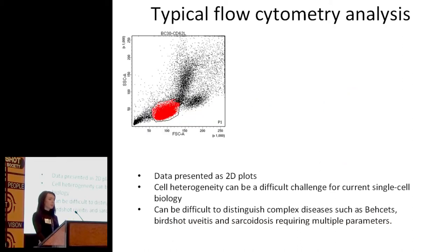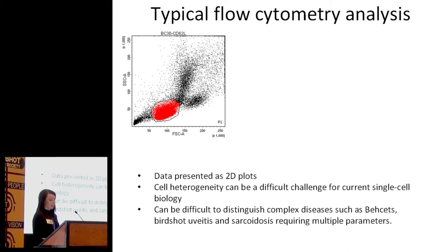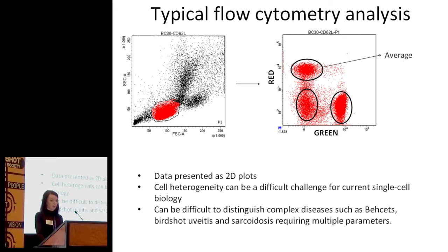If you're going to do flow cytometry, this is the typical flow cytometry plot that you would get. It's represented as a two-dimensional plot, so you're looking at two parameters at any one time. Each dot within this plot is representative of a single cell, and single cells will always cluster together with similar characteristics. We can gate on these populations — you can see in red the gated population — and then separate that out again by two parameters, looking at different colors such as red and green, and gate on those populations again to learn more about those cells.